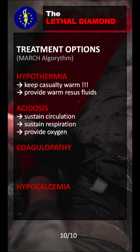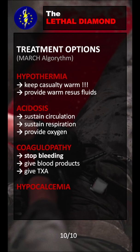Coagulopathy — the decrease of clotting — will obviously cause more bleeding, and our priority should always be to stop the bleeding and keep the blood inside the patient's vessels. This can be done externally through bandages and tourniquets, or internally by giving blood products and TXA to help the clotting internally.